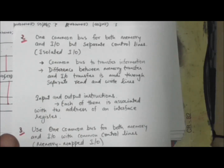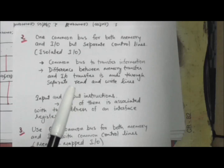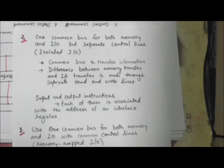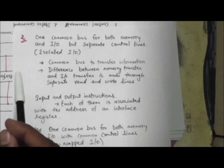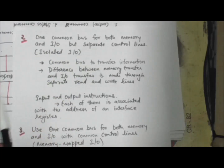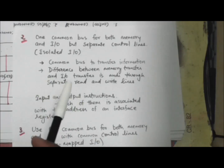In the isolated input-output configuration, the CPU has distinct input and output instructions, and each instruction is associated with the address of an interface register. When the CPU decodes the operation code of the input or output instruction, it places the address on the address line and at the same time activates the input-output read or input-output write control line. This informs the input-output devices that the address on the address line is for an interface register, not for a memory word. When the CPU communicates with memory, it places the address on the address line and activates either the memory read or memory write control line, informing devices that the address is for a memory word.